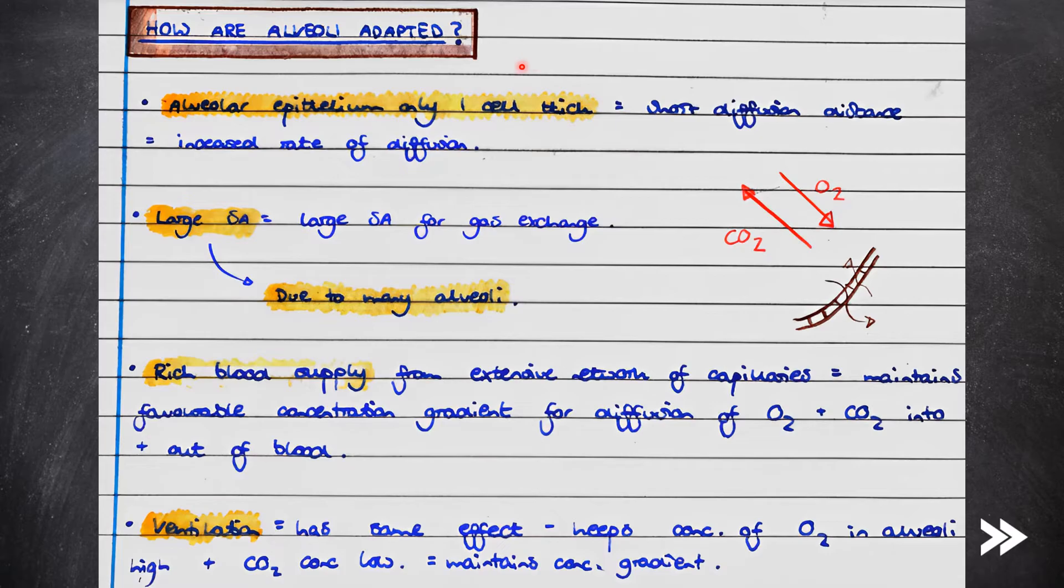We also need to consider the adaptations of the alveoli to maximize the rate of diffusion of oxygen and carbon dioxide, so that as much oxygen can enter the blood to reach respiring cells for aerobic respiration, and as much carbon dioxide can be removed from the blood in order to prevent it from building up. So, the alveolar epithelium is only one cell thick, which creates a short diffusion distance. There are many alveoli in the lungs, which creates a large surface area for gas exchange to take place. The extensive network of capillaries provides a rich blood supply, maintaining a favorable concentration gradient for the diffusion of oxygen and carbon dioxide into and out of the blood. Ventilation has the same effect, just on the side of the alveoli. It keeps the concentration of oxygen in the alveoli high, and the concentration of CO2 low.